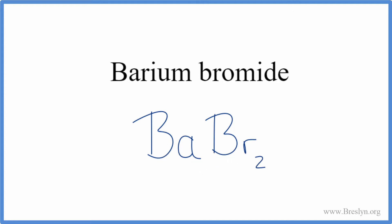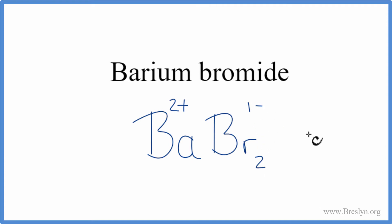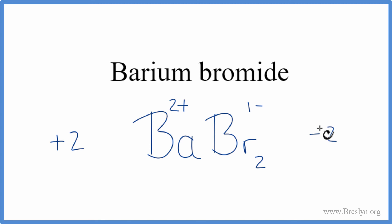We should check our work though. Ba was 2+, and bromine was 1−. So I have 2 bromine atoms, each one is −1, so 2 times −1 equals −2. And then 1 times 2+ equals +2. Plus 2 and minus 2 add up to 0. So this is the correct formula for barium bromide. And this is Dr. B — thanks for watching.